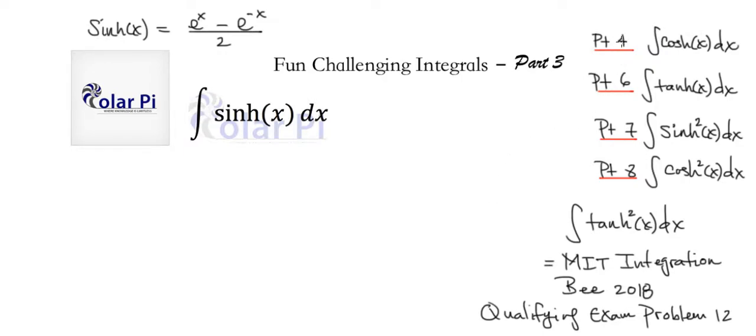In this video series, in part 4 we'll do cosh, part 6 we'll do tanh, part 7 we'll do sinh squared, part 8 we'll do cosh squared, and if you want tanh squared you can find it as problem 12 in my video series of the MIT Integration Bee 2018 qualifying exam.